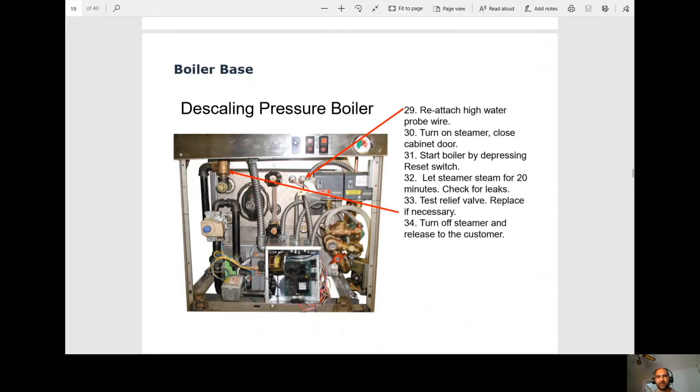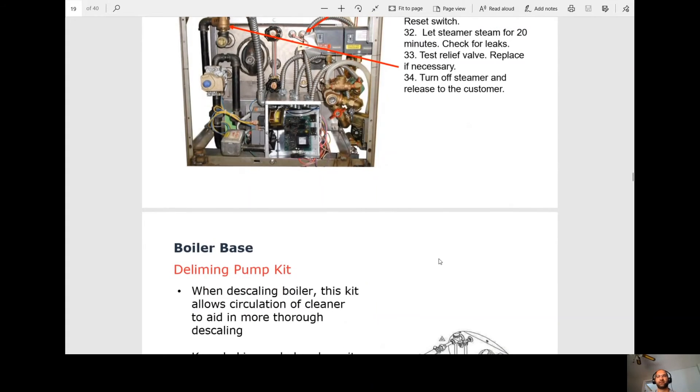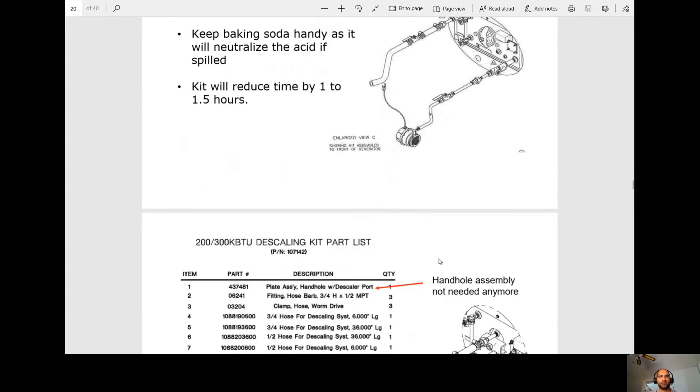So once the boiler fills, the reset light is going to come on. You're going to click the reset switch. Now we're going to steam it for 20 minutes. We're going to check for any leaks. We're going to test the pressure relief valve right here. That needs to be tested every time we descale the boiler. At that point, once the 20 minute steam is done, turn off the steamer and that's the end of the process.